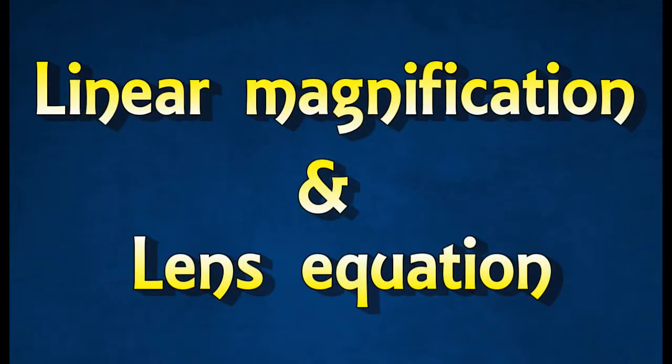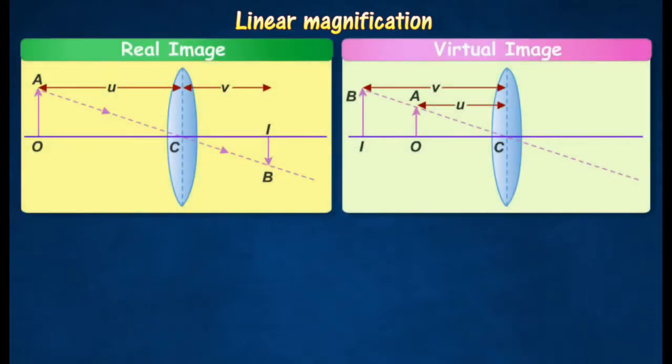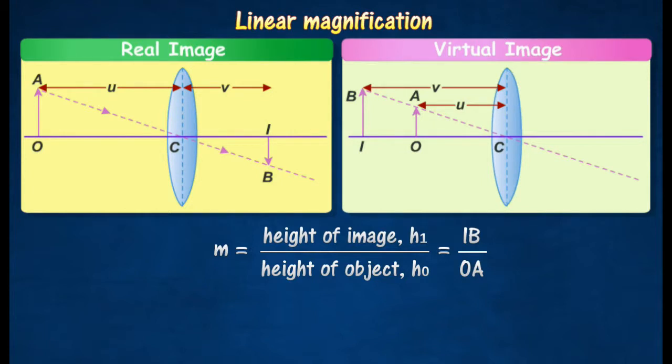Linear Magnification and Lens Equation. The linear magnification M is defined as the ratio of the height of the image to the height of the object.